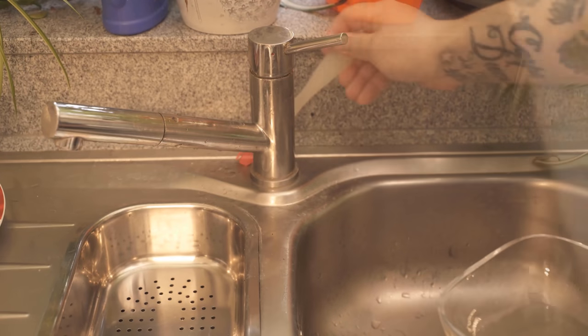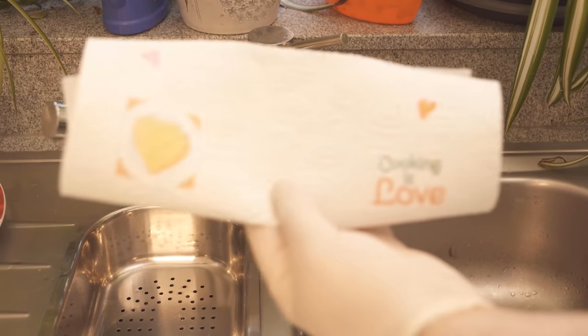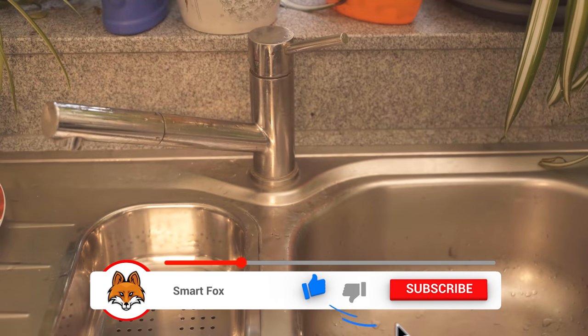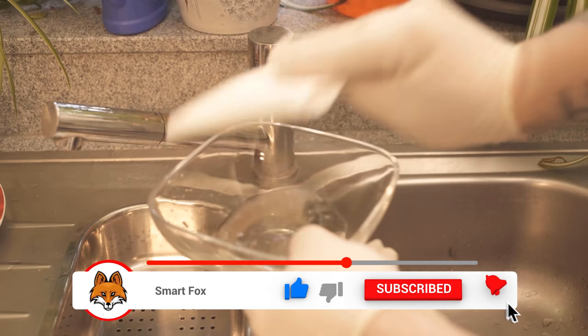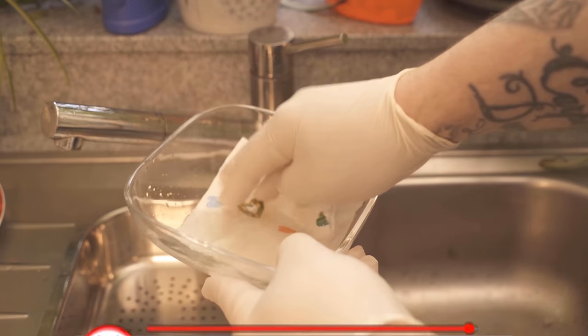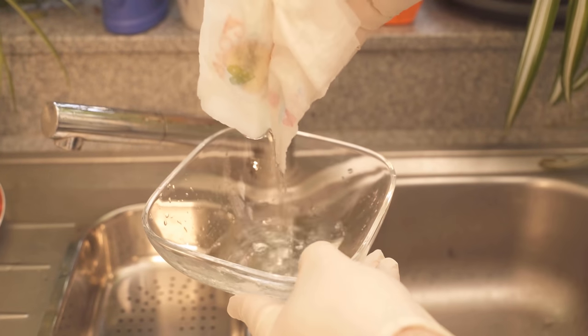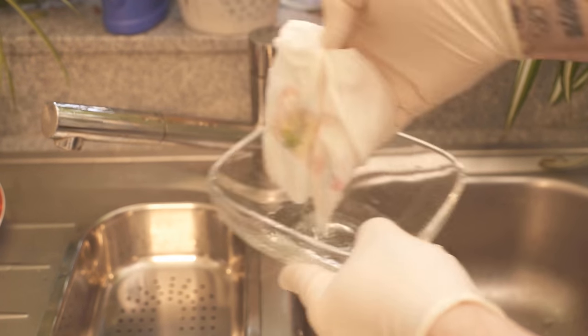In the next step we need our household roll. This we dip once in the vinegar. Here I would recommend you to wear gloves so that you do not touch the vinegar with your fingers. This could possibly sting a bit. We now go with this household cloth into the vinegar until it is completely soaked.